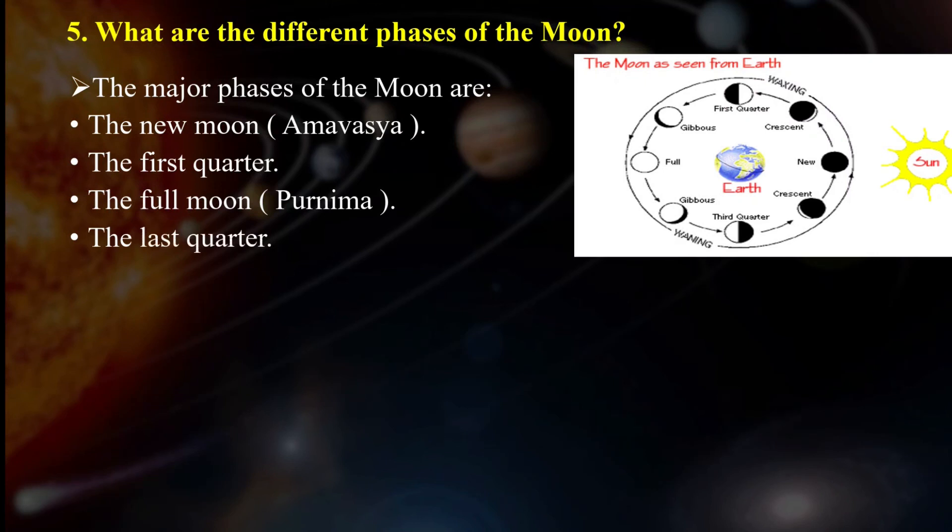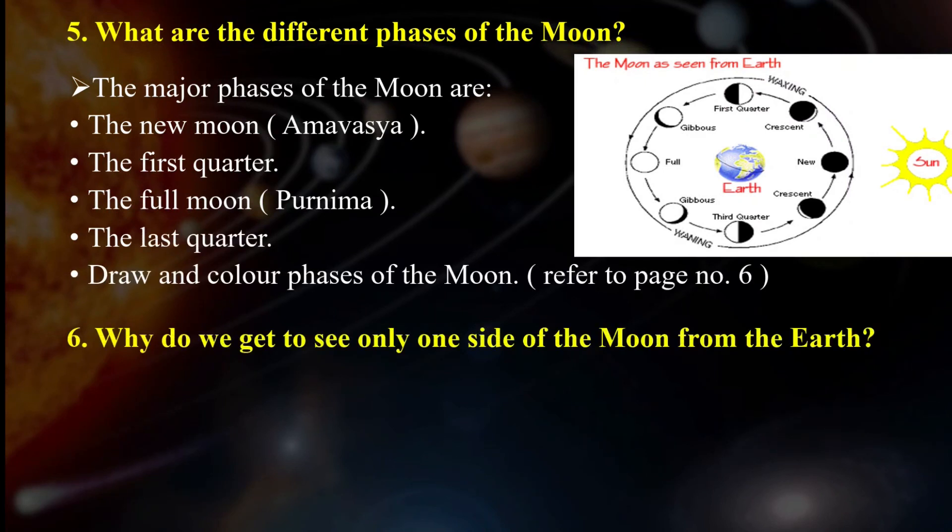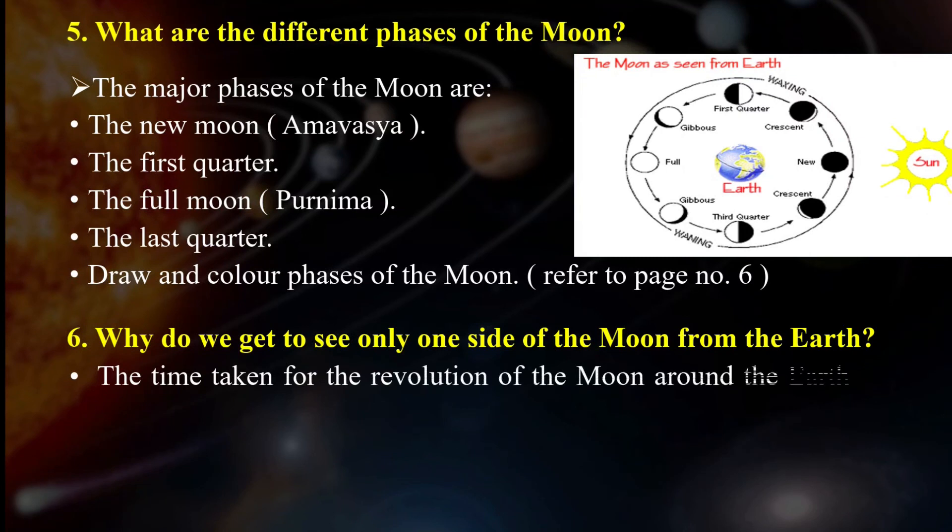Next, why do we get to see only one side of the moon from the earth? The time taken for the revolution of the moon around the earth is 27 days and 8 hours. Since the time taken for the moon to rotate is also the same, we always see the same side of the moon.